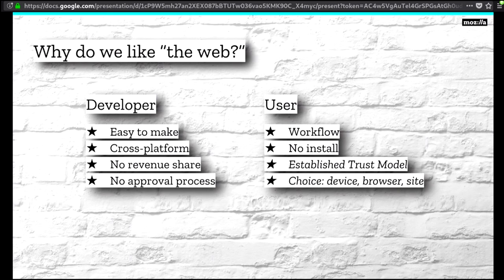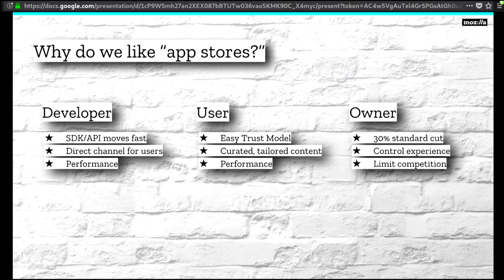App stores — that's the other big model, right? And app stores, love them or hate them, they're extremely successful and actually pretty nice. As a developer, the SDK and the API moves very fast. Why? Because there's no consensus needed. A single group of people can decide, and then everyone else follows suit. A lot of times this is really good as a developer because you get things moved very quickly. Next, you have a direct channel to your users. You know exactly where they are because there's only one place they can be. And then performance — you can optimize specifically for your platform, much easier than the cross-platform world of the web.